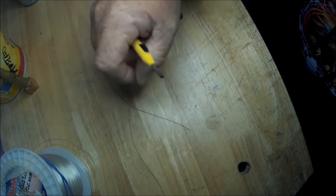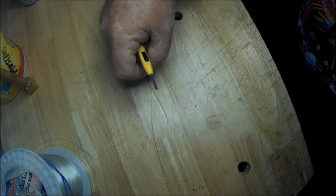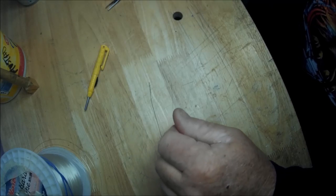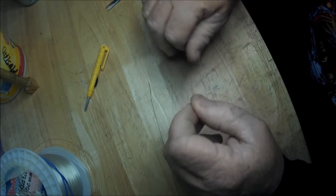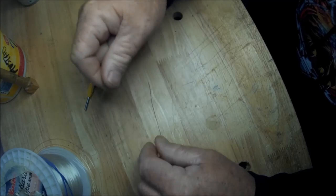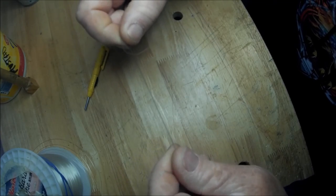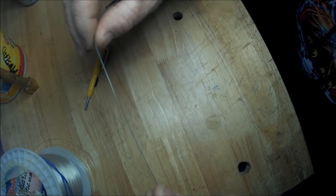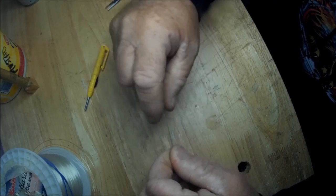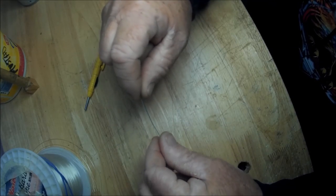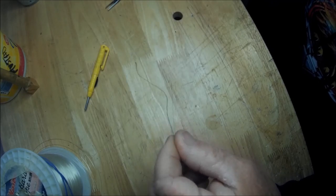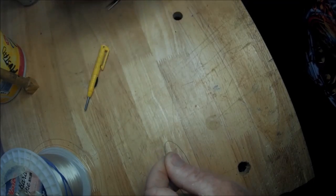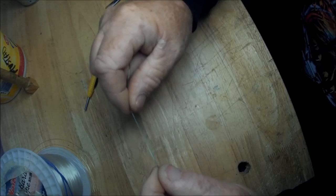Take some braid. This is for a braid to mono connection. What we got here is 20 pound braid, 20 pound mono. You lay the two together. You're gonna take it, you gotta just have a length of mono not attached to anything, just laying by itself.